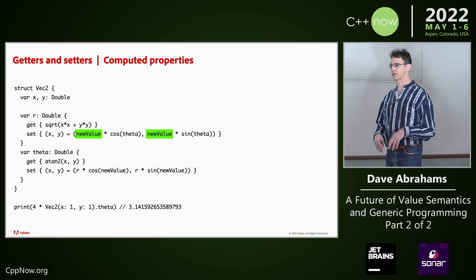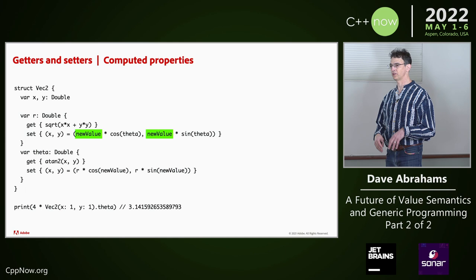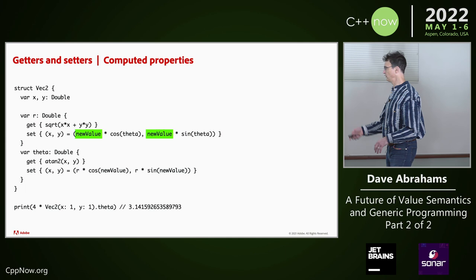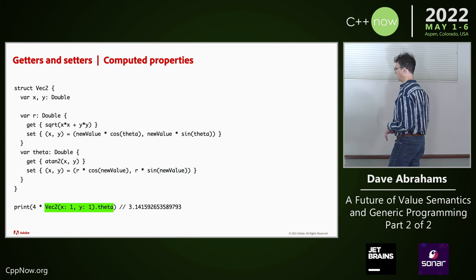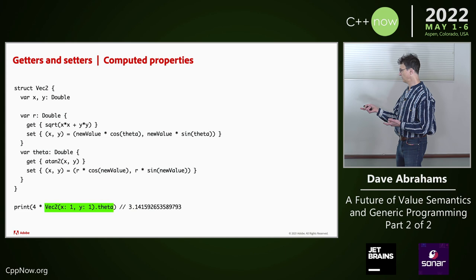This 'new value' that you see here is the standard default identifier for the incoming value for setters. There's a way to override it, but it's not really important. Theta is basically the same thing — different math. Here's theta in use: we make a vec2 of 1, 1, get the angle, that's pi over 4, so I multiply by 4 and get pi. I think it's right.